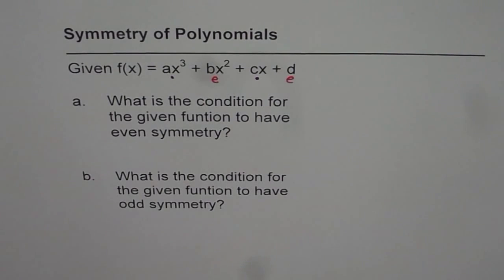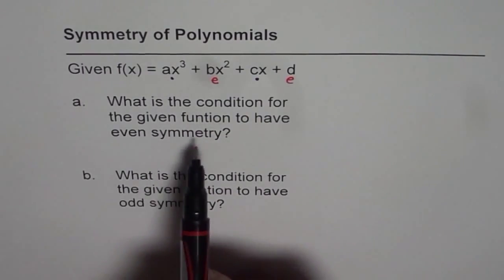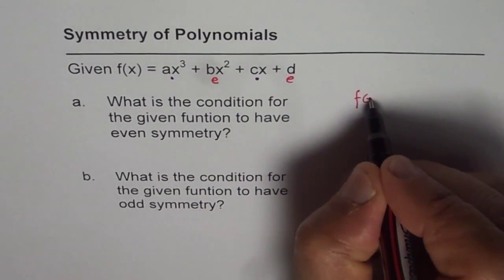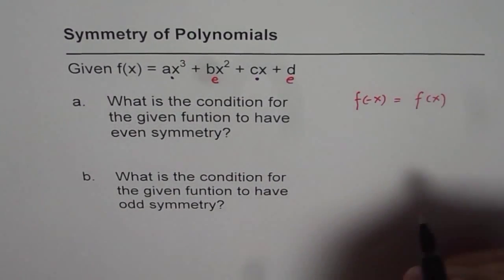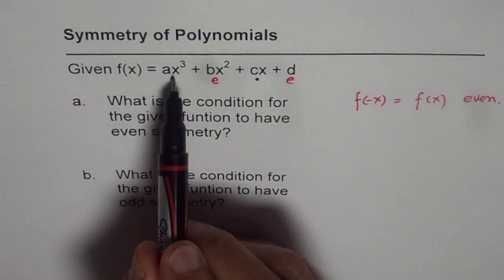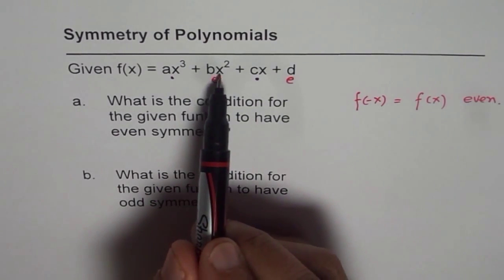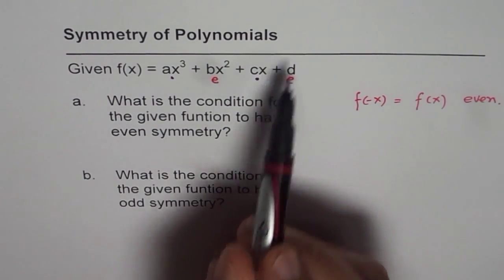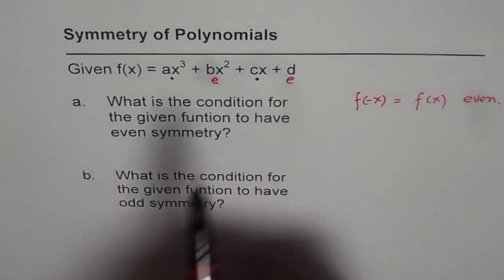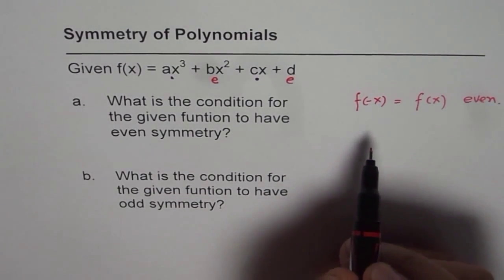We can prove this algebraically. For part one: what is the condition for the given function to have even symmetry? Even symmetry means that f(−x) = f(x). Now if I write x as −x, then x³ becomes negative and x becomes negative, but x² stays as x² because (−x)² = x². And the constant term is x to the power of zero — zero is also even — so it remains unchanged.